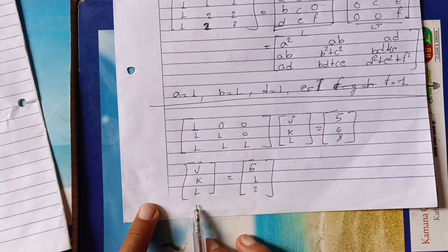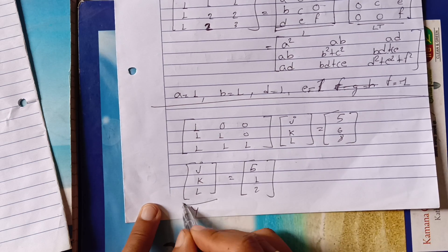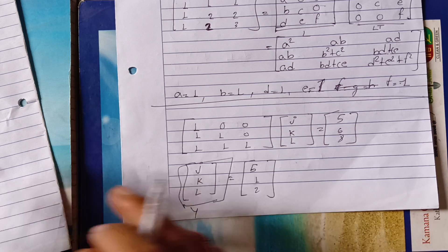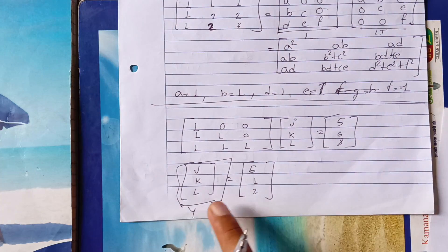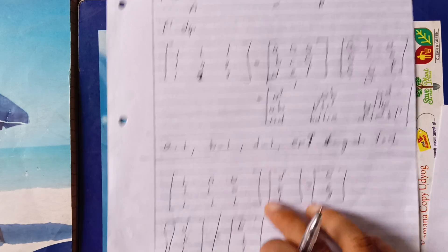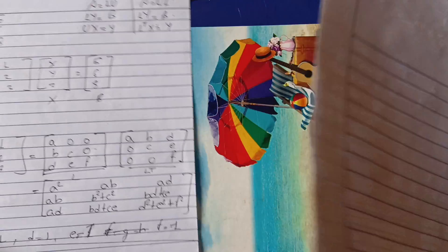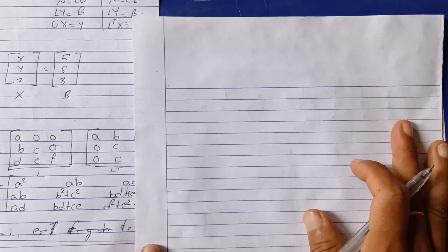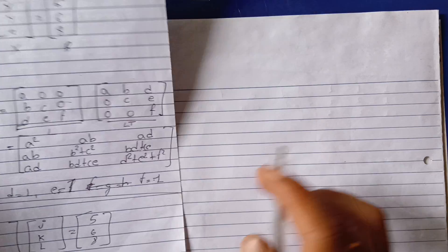The value of J, K, L is equal to J, K, L. So I will take the second step and find the value of J, K, L. Then the third step: L transpose X equals Y, so we have L transpose here.